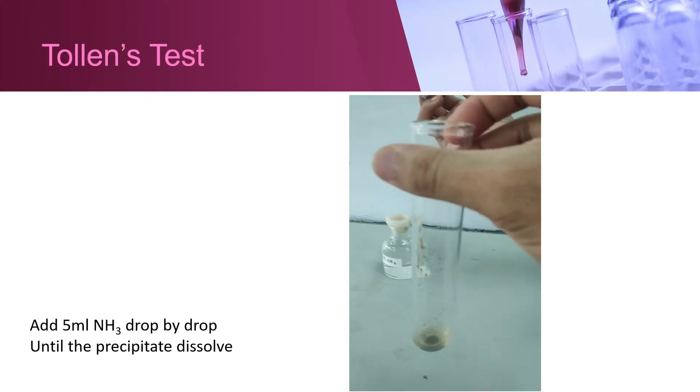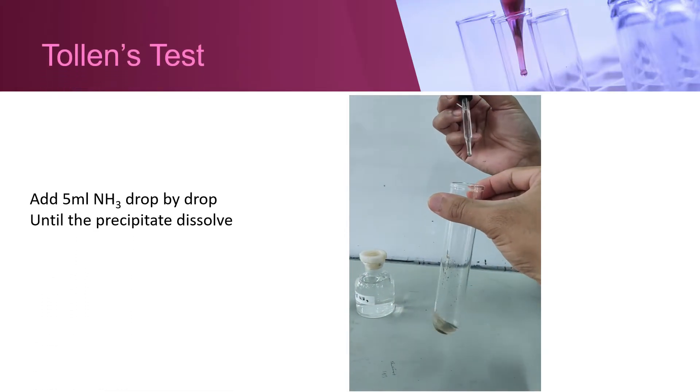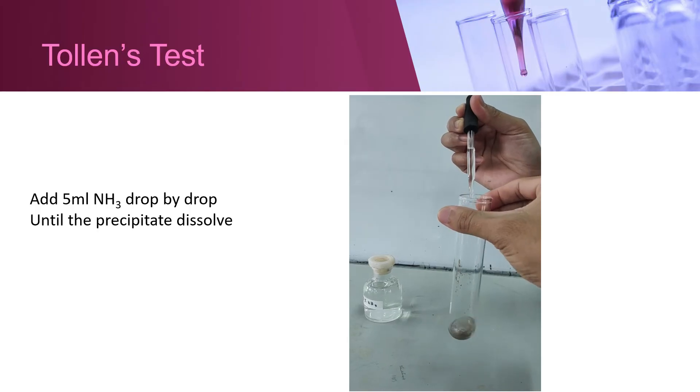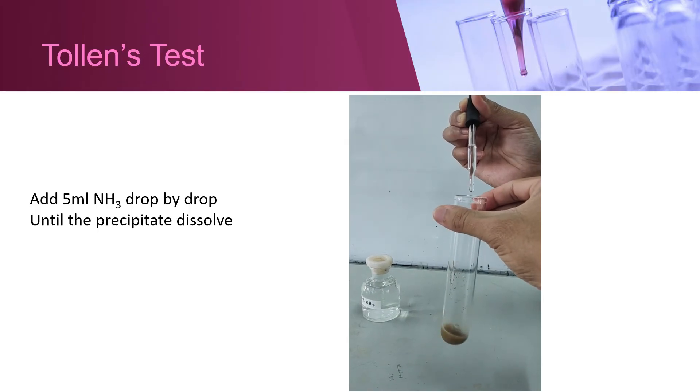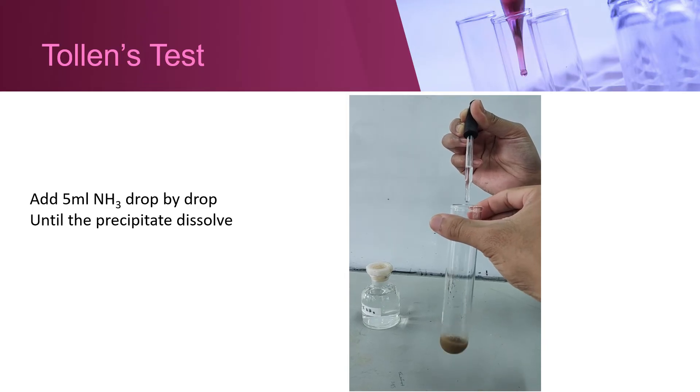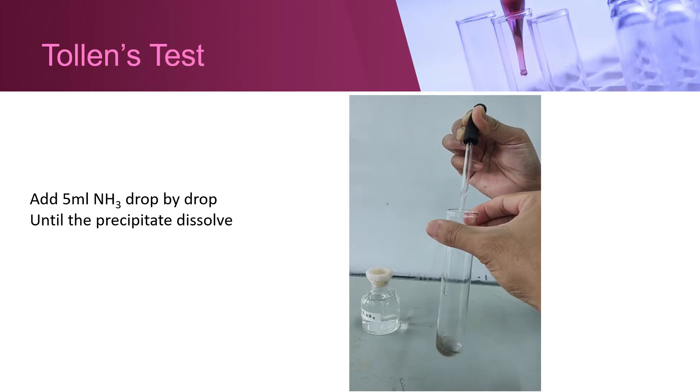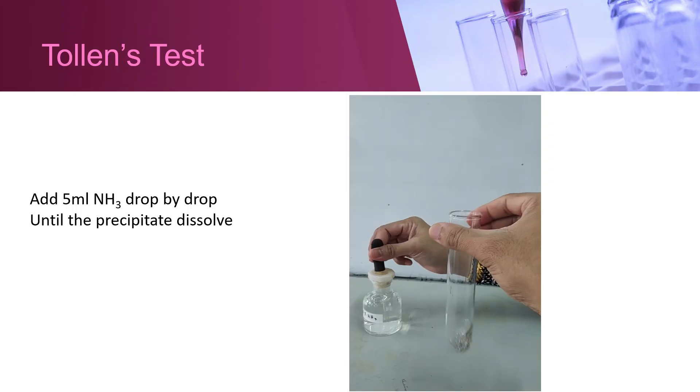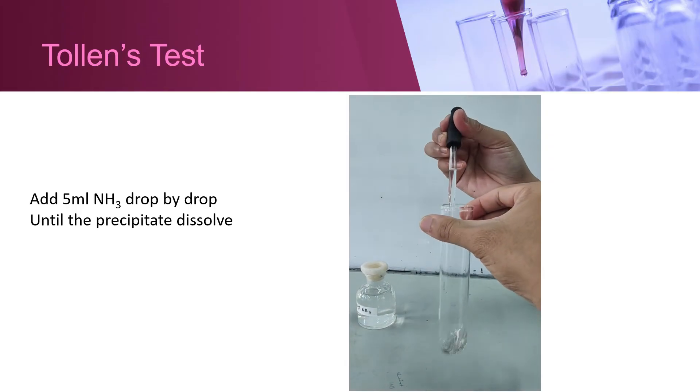Add 5% ammonia drop by drop until the precipitate dissolves. Add 10% ammonia drop by drop until the precipitate dissolves.